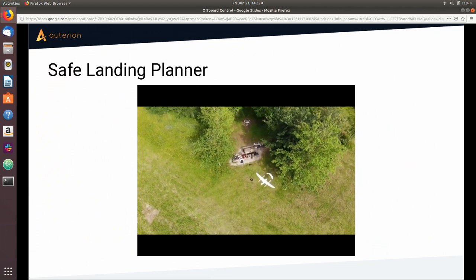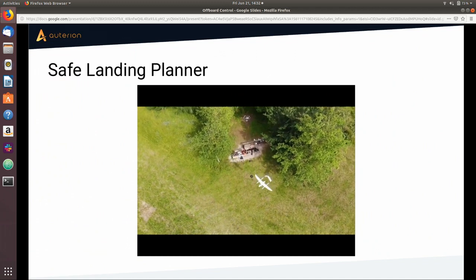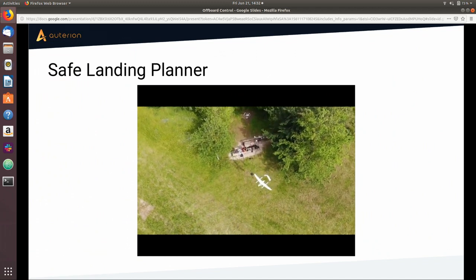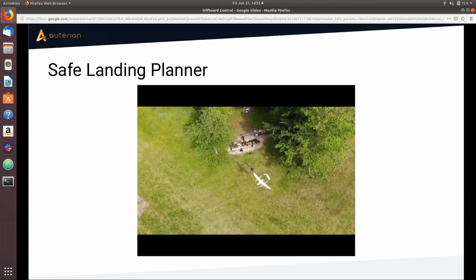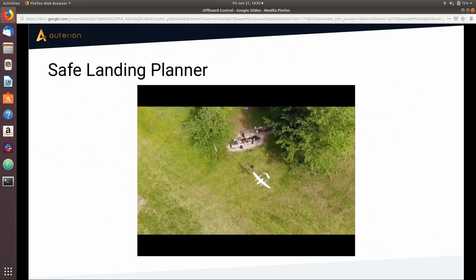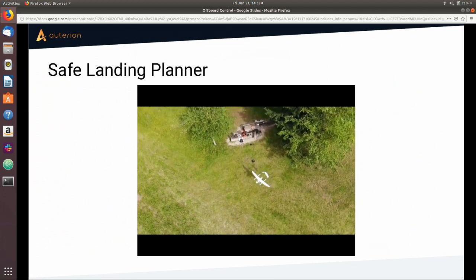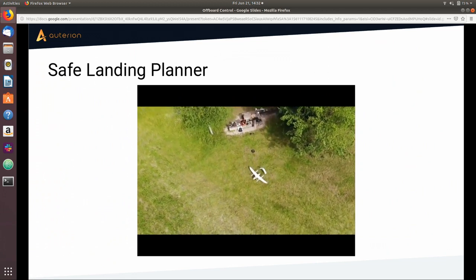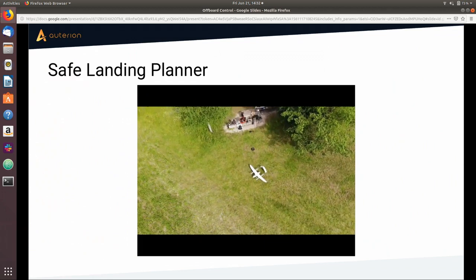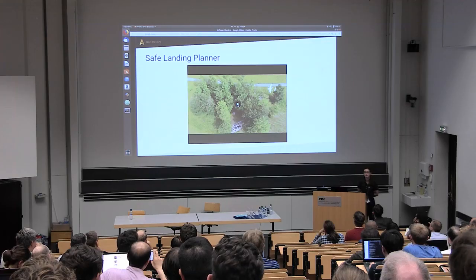How do you decide what space is safe to land on? It's looking at the point cloud Z values and computing mean and variance in a grid, then evaluating whether the area is flat enough to land.